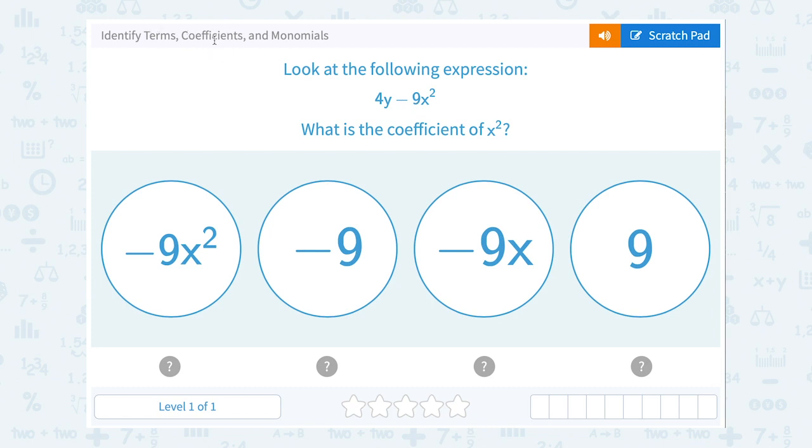Coefficients, that second vocabulary word, coefficients are the number in front of the term. And monomials mean things that just have one term.